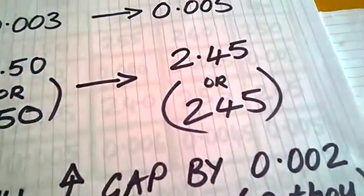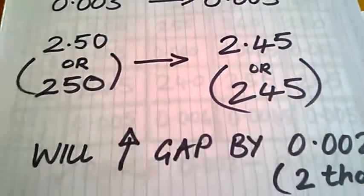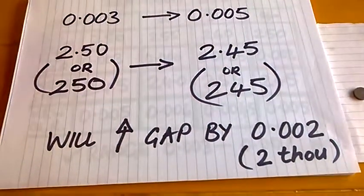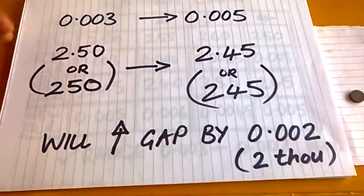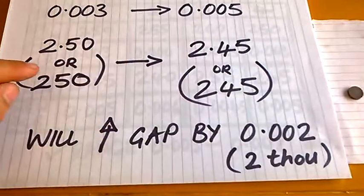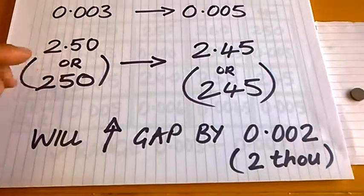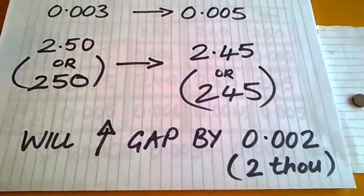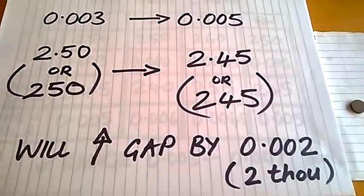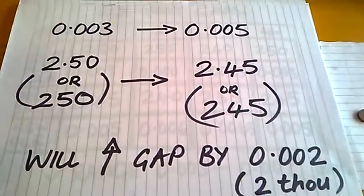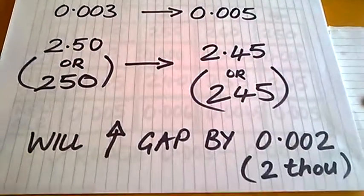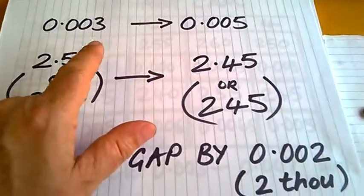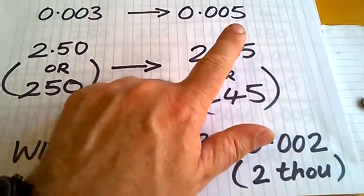So if we go to a real example of my number one cylinder exhaust valve, it had a clearance of 3 thousandths, which is right on the limit, the lower limit. And I wanted to put it in the middle of the range, about 5 thousandths. And it had a 250 shim in there. So we put a slimmer shim in, a 245, down by 0.05 of a millimeter, which gives us 2 thousandths more clearance. So the gap's going to go by 2 thousandths if I do that. So it'll take me from the 3 thousandths to 5 thousandths, which is in the middle of the range.